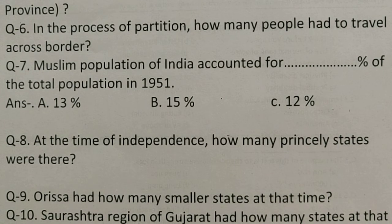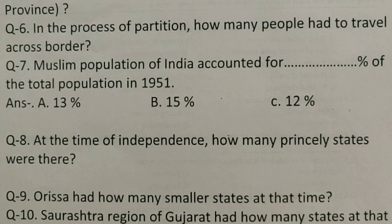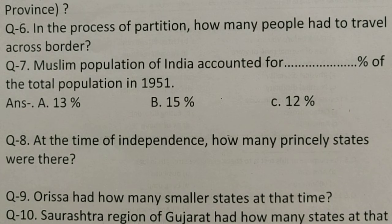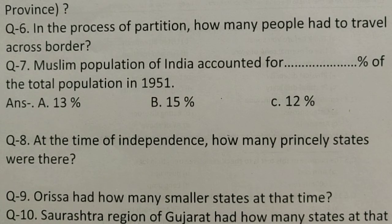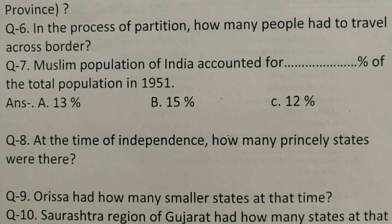At the time of independence, how many princely states were there? The right answer is 565. And further, the right answer includes 14 big states and 119 small states, with 26 also noted in reorganization details.